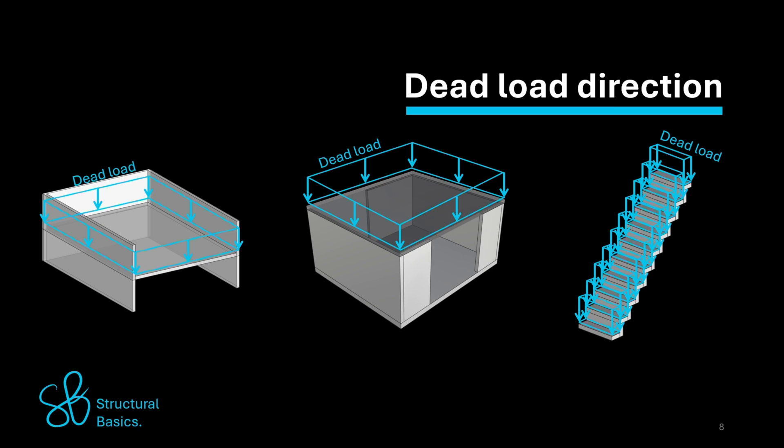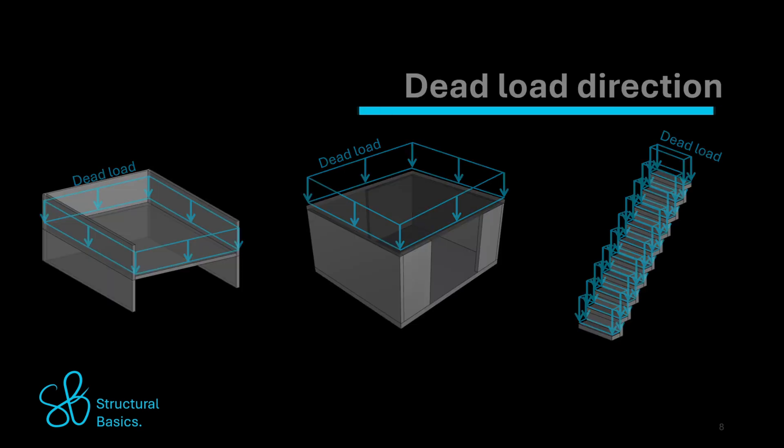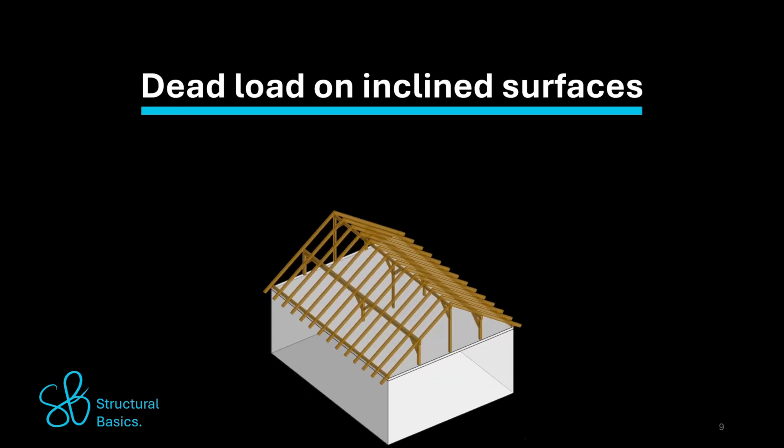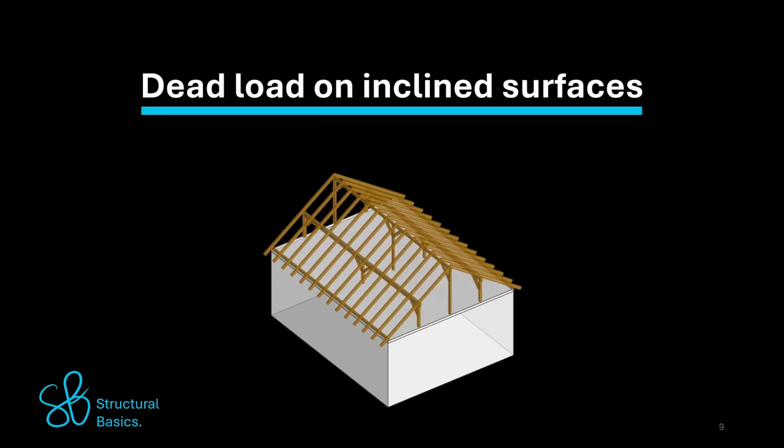But it gets a bit more tricky when we need to apply the dead load to an inclined structural member, like a rafter roof. The dead load gets applied to inclined structures with the load direction z-axis downwards, while the distribution follows the inclination of the roof. So in a 3D view, it looks like this.